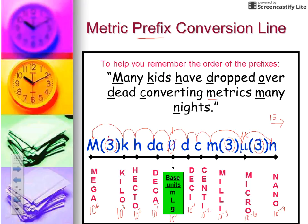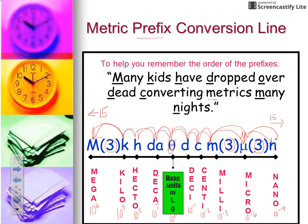Likewise, if you were moving from nano all the way back to mega, you would count starting at nano and move your decimal in the direction you're going — 15 places to the left. Now often we're not moving to that extreme on the chart, but you hop prefix to prefix, counting one space per hop unless you hop over a 3. There are three M words — mega, milli, and micro — and those are where the 3's occur.